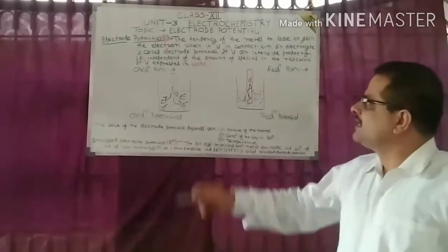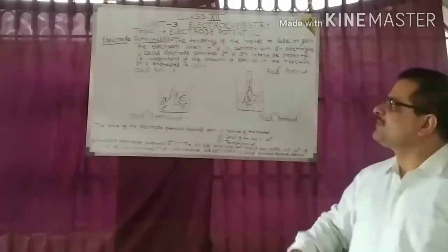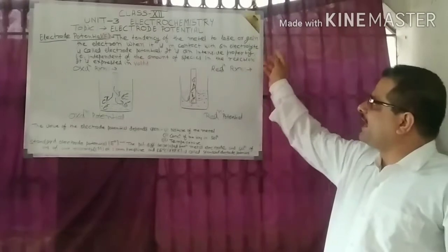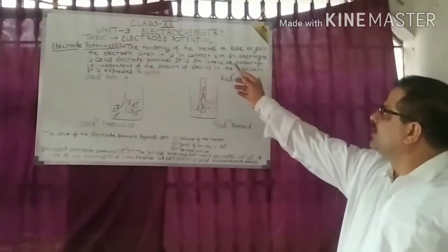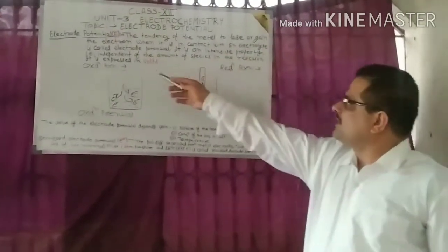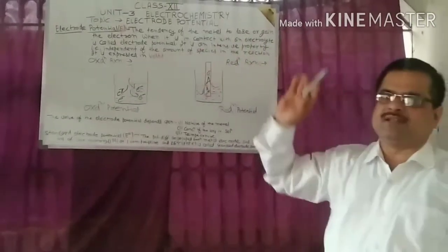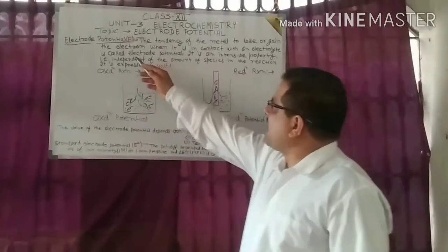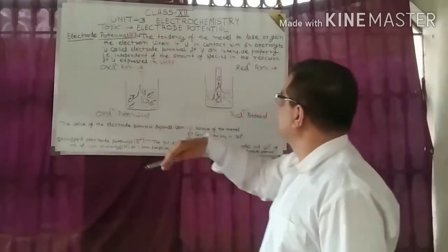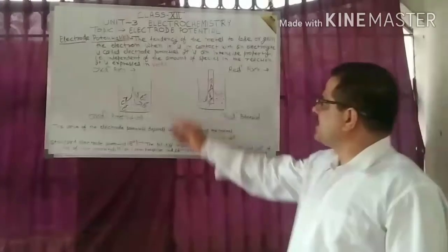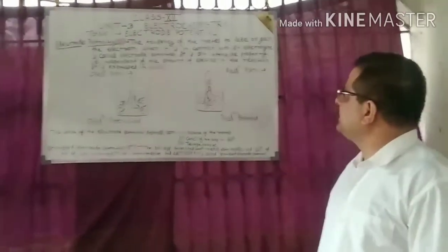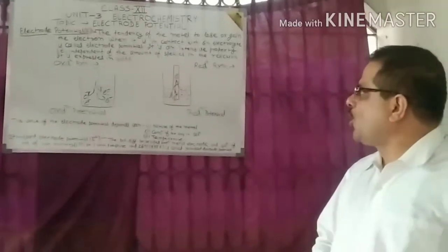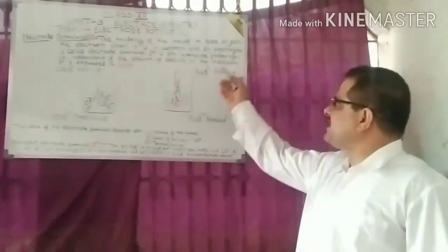The tendency of the metal to lose or gain electrons when it is in contact with an electrolyte is called electrode potential. It is written as E and expressed in volts. It is an intensive property, independent of the amount of species in the reaction.